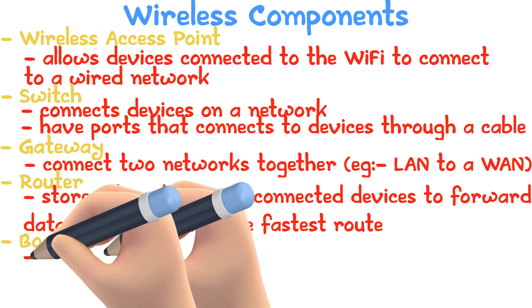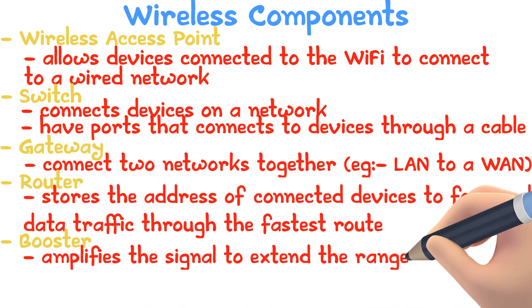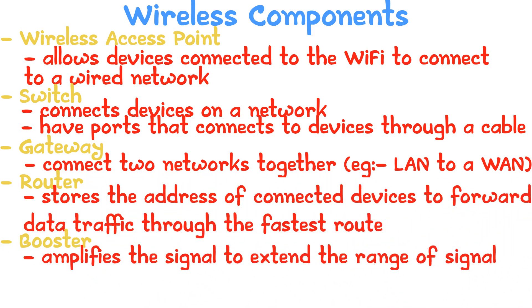Booster: this amplifies the signal to extend the range. Ethernet cables need boosters every 100 meters, and even Wi-Fi would need a booster past the signal limit.